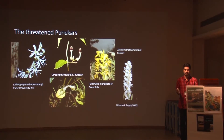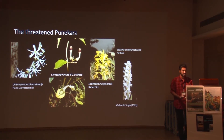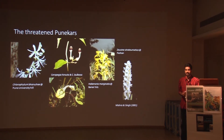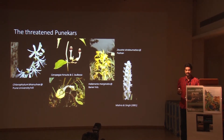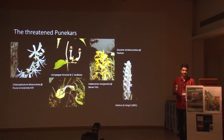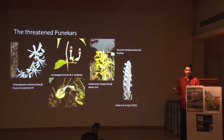My talk will now focus on a few case studies on plants which I call the 'Threatened Punecars.' The first one is Chlorophytum - seen abundantly on Pune's city hills, endemic to India, and found in Karnataka and Maharashtra at only three to four localities. All these species are being hampered by plantation drives directly. The second panel has two Ceropecias: Ceropegia bulbosa, which is slightly rare, and Ceropegia hirsuta, which is fairly common around the hills. These are typical grassy species that do not prefer shade, and that's why they are getting hampered.